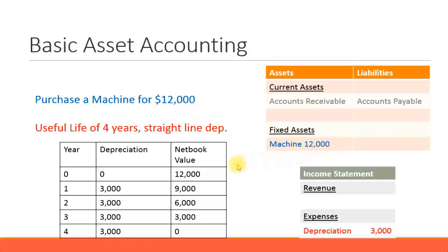Now it will have four years of useful life and straight-line depreciation, so it's going to depreciate at a straight line. Four years means per year it's going to reduce by $3,000. So that's $3,000, $3,000, $3,000, and $3,000. So every year in your income statement the depreciation value will be $3,000. If this balance sheet was prepared in 2016, then in 2017 the machine value will be $9,000.